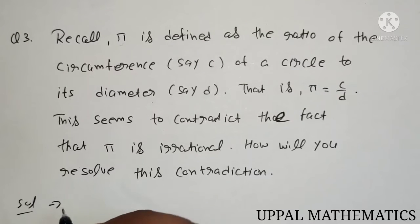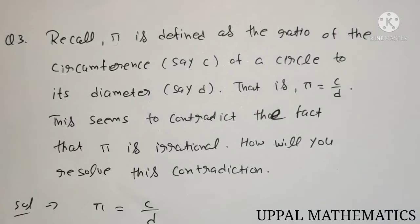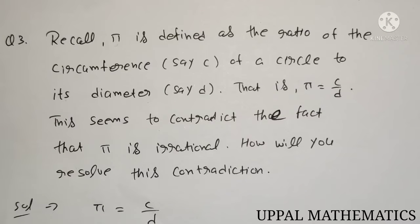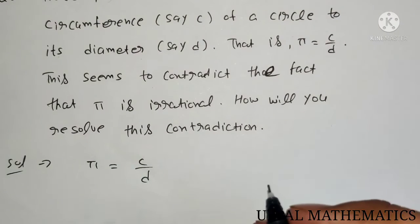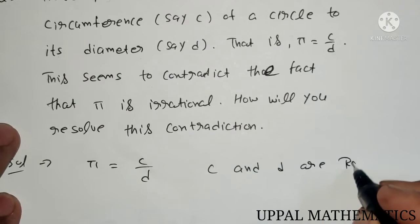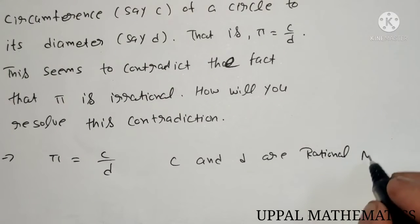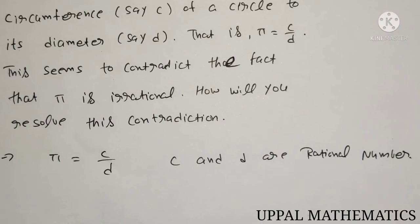Pi is given by circumference divided by diameter, that is C upon D, where C is circumference and D is diameter. Now, C and D are rational numbers. But if we calculate C upon D, what result does it give us?